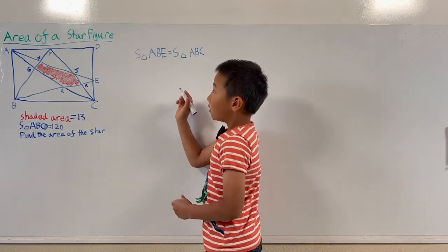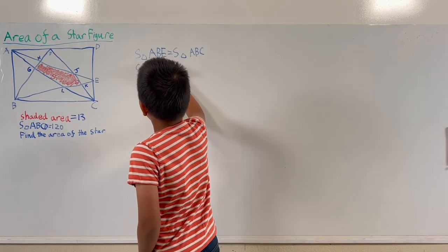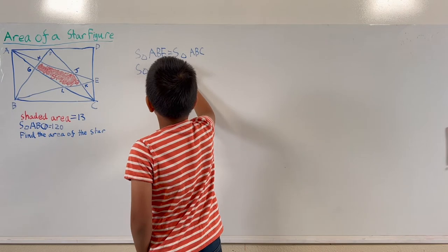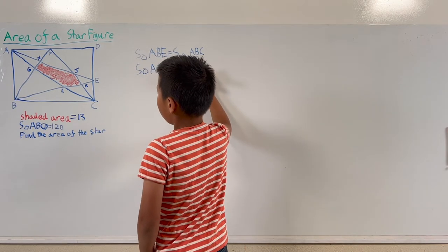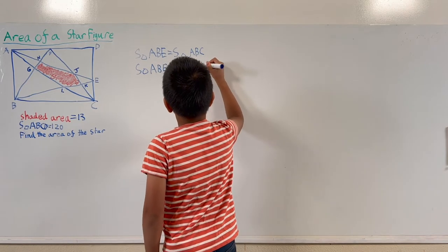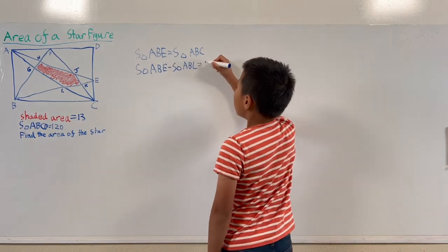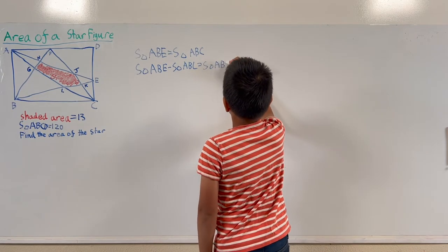So we can know that the area of triangle ABE minus the area of triangle ABL equals the area of triangle ABL.